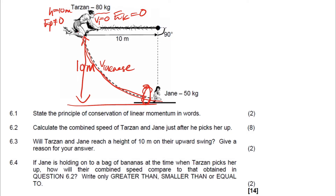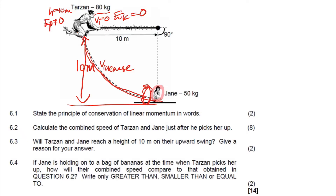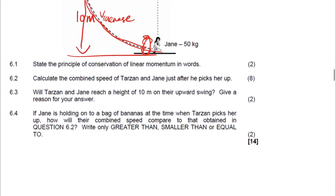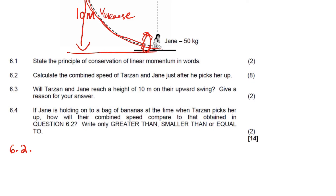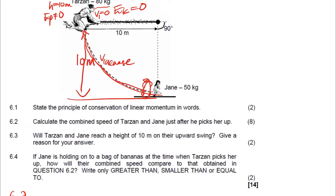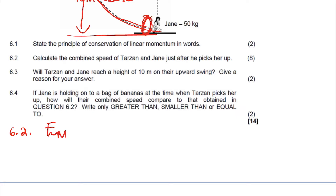Question 6.2 asks for the combined velocity after the collision. First, we need to calculate Tarzan's velocity just before he picks up Jane — that's the velocity before collision. Then we can calculate the velocity after the collision when he picks up Jane. We'll use conservation of mechanical energy: mechanical energy at the top equals mechanical energy at the bottom.